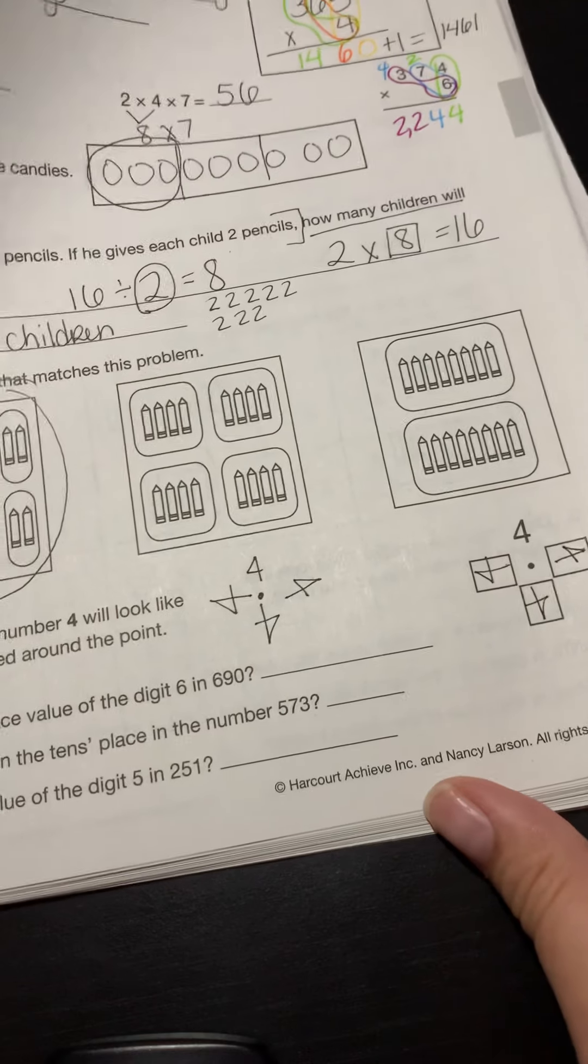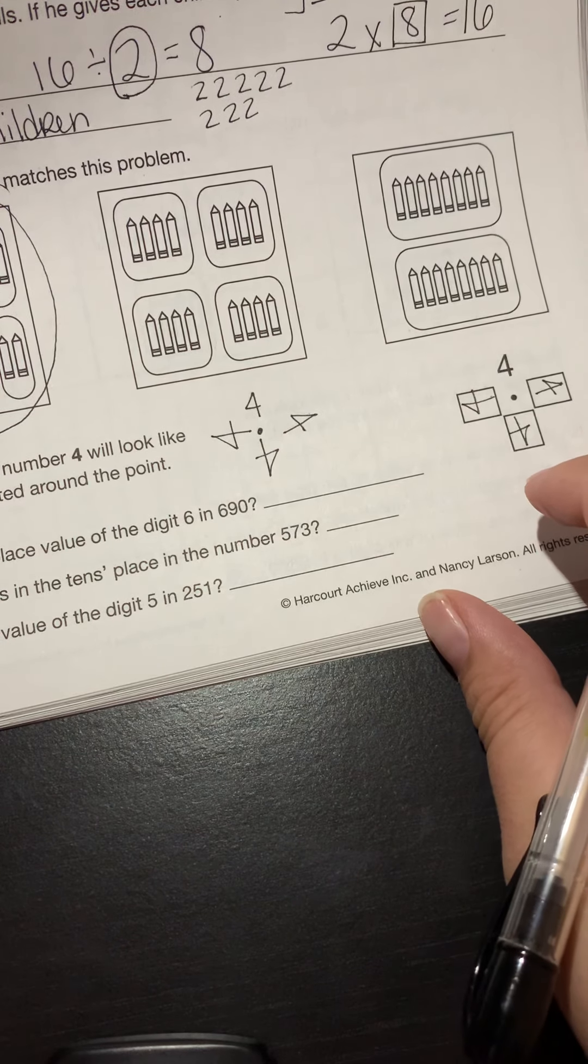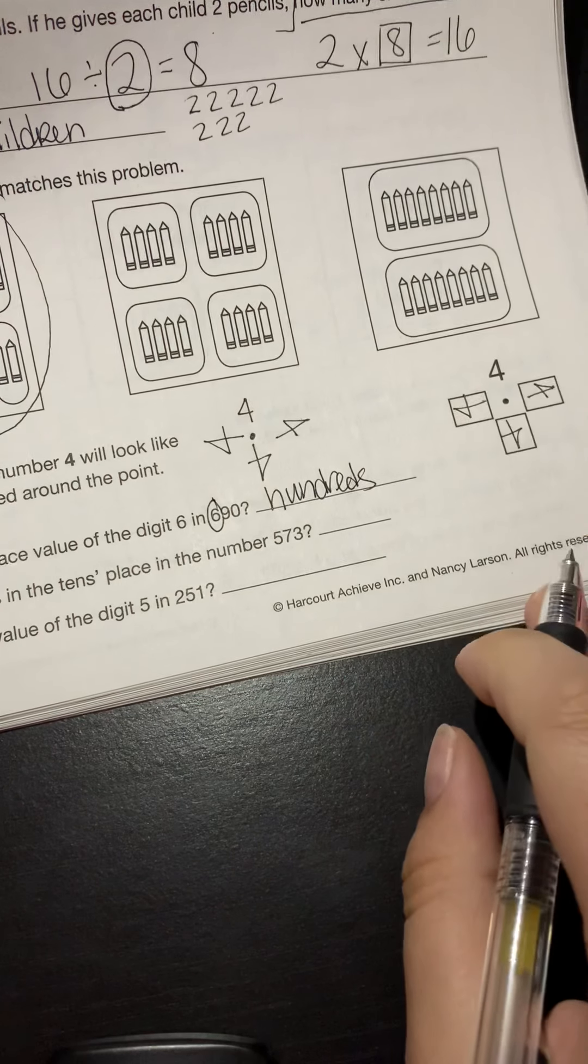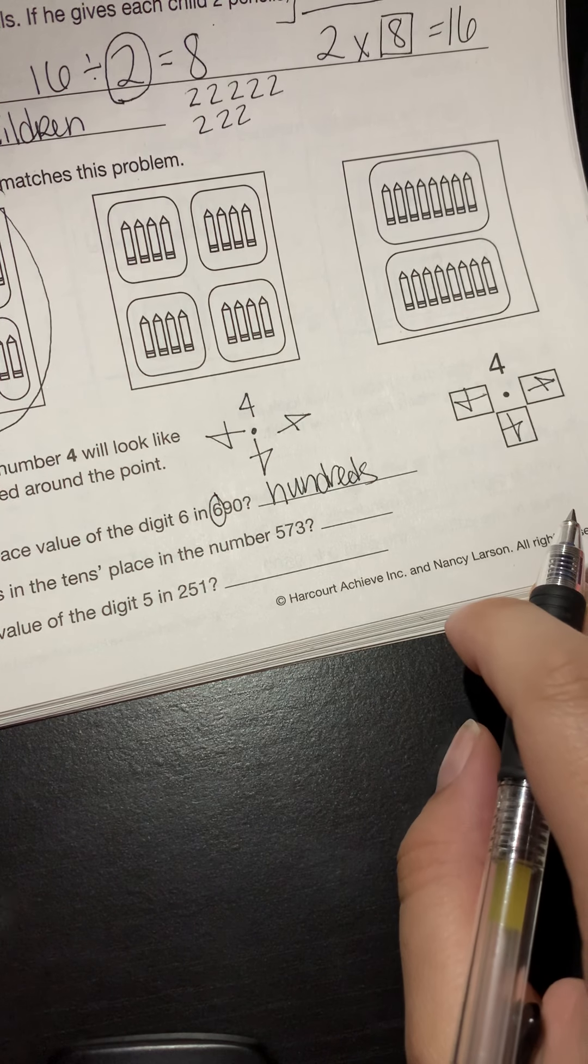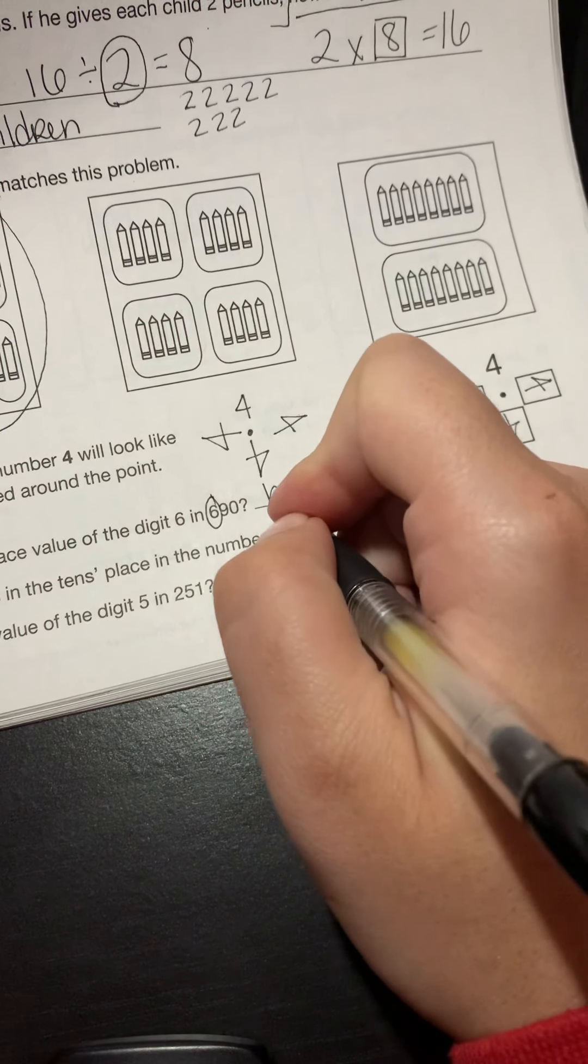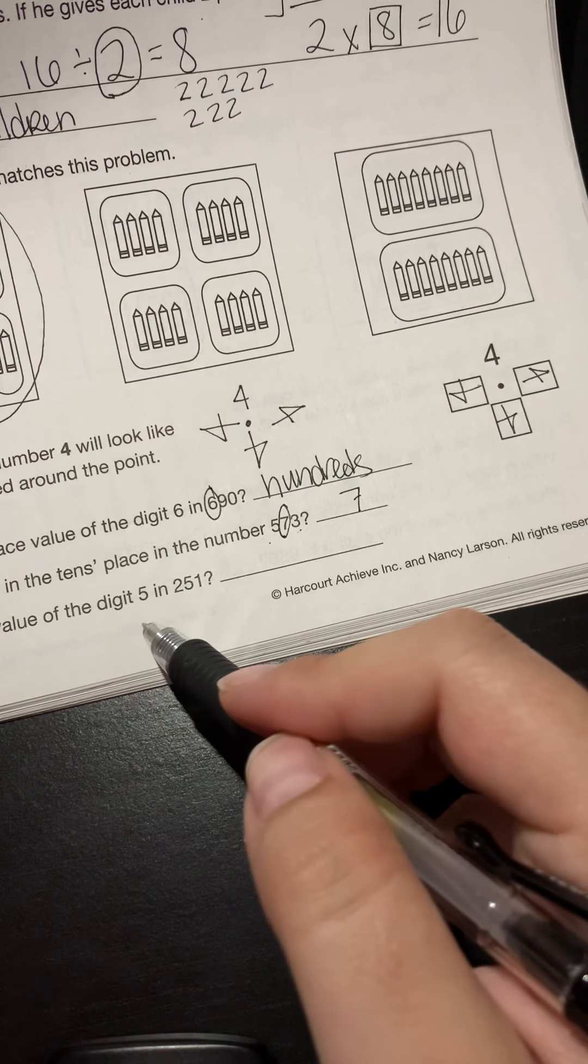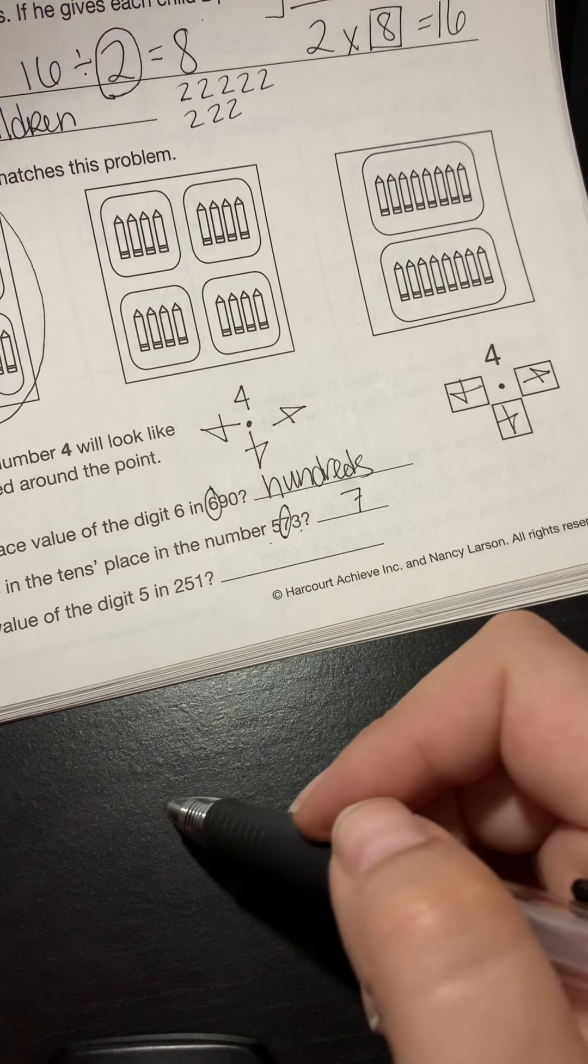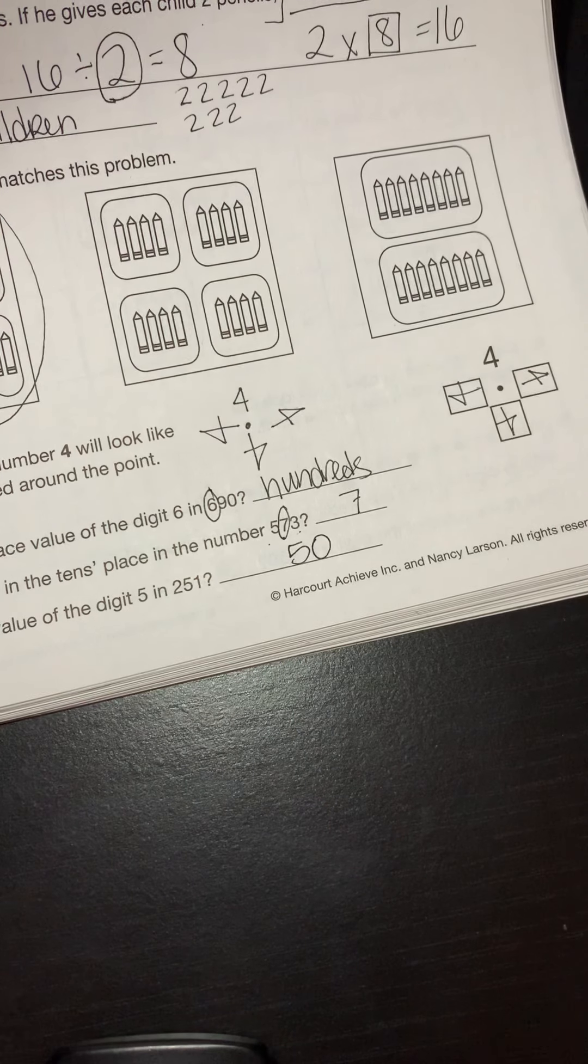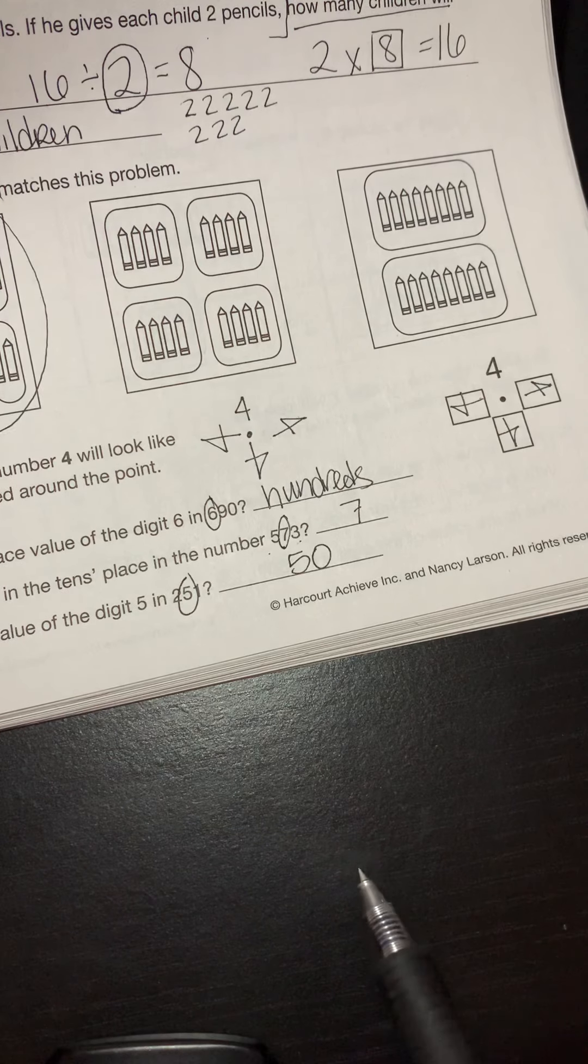Okay. Last problem. This was really quick. Number six. What is the place value of the digit six in 690? Hundreds. Perfect. What digit is in the tens place in the number 573? Well, we have ones, tens, hundreds. So the digit is seven. Easy peasy. What is the value of the digit five in 251? Wow. Easy. The value of the digit five is 50 because it is also in the tens place, just like our seven was in 573.